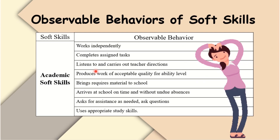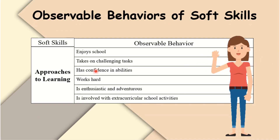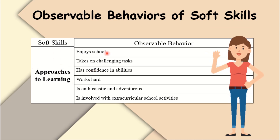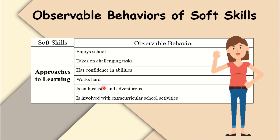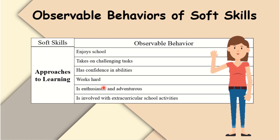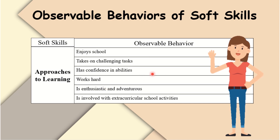The last category of soft skills is approaches to learning. Observable behaviors include: enjoys school; takes on challenging tasks; has confidence in abilities; works hard; is enthusiastic and adventurous; and is involved with extracurricular school activities.